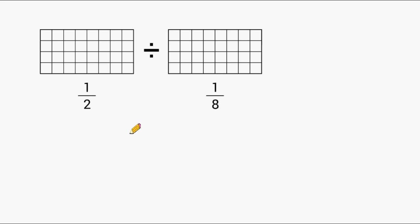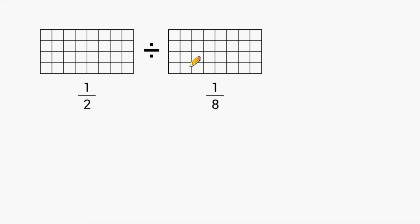This is Mr. Masonette, and what we're going to do today is practice dividing a fraction by another fraction using the aid of a visual model. The first thing we want to do is shade half of the squares in this figure, and then shade 1 eighth of the squares in this figure.